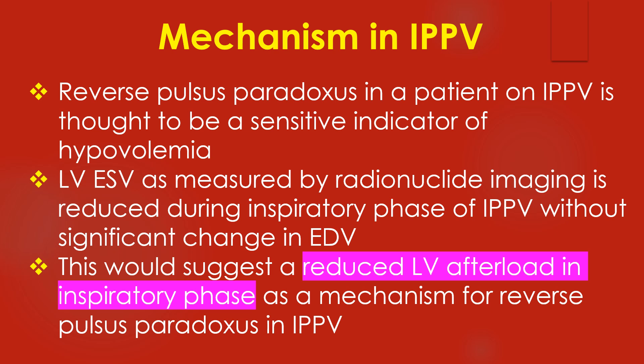Reverse pulsus paradoxus in a patient on IPPV is thought to be a sensitive indicator of hypovolemia. LV end-systolic volume as measured by radionuclide imaging is reduced during the inspiratory phase of IPPV without significant change in end-diastolic volume. This would suggest a reduced LV afterload in the inspiratory phase as a mechanism for reverse pulsus paradoxus in IPPV.